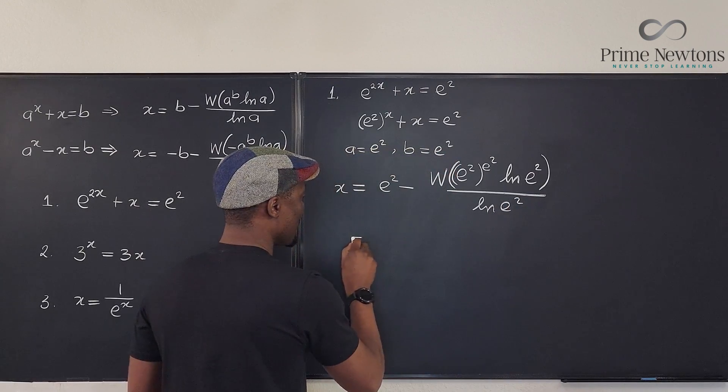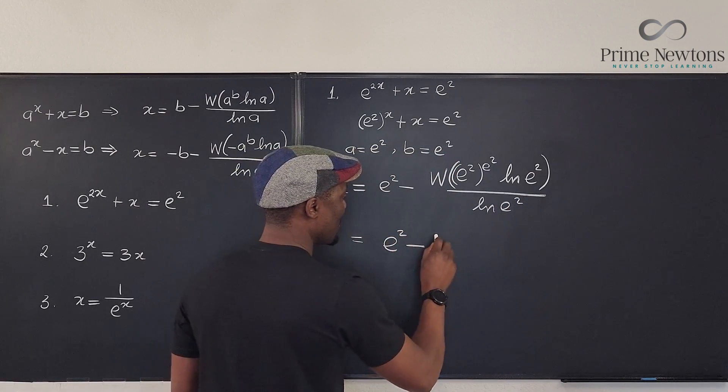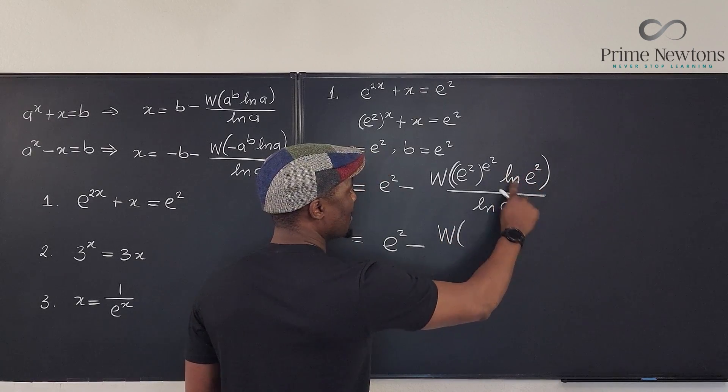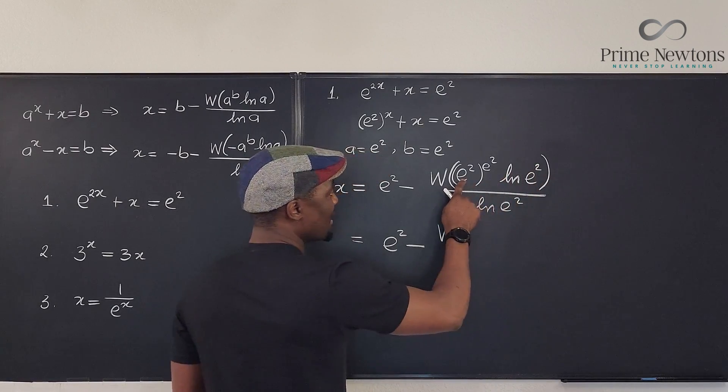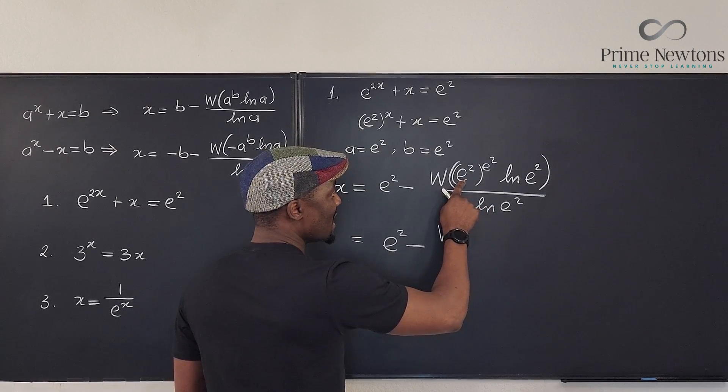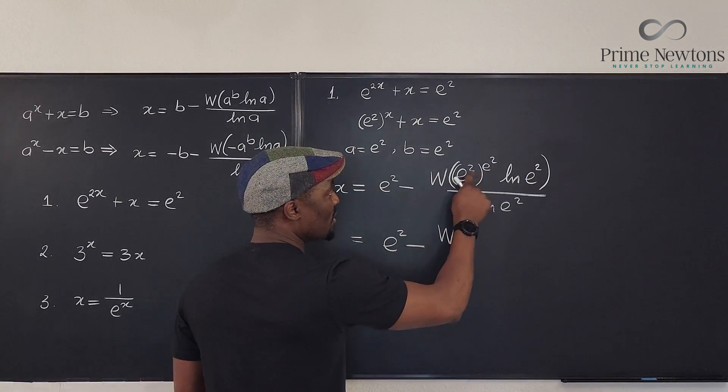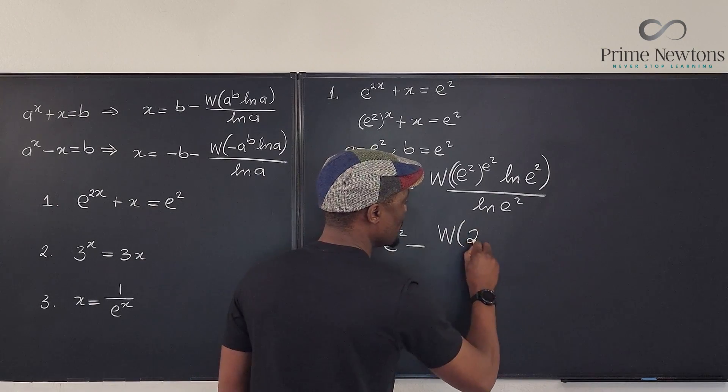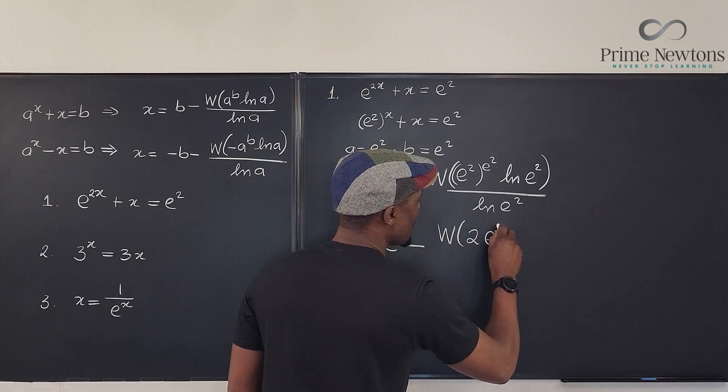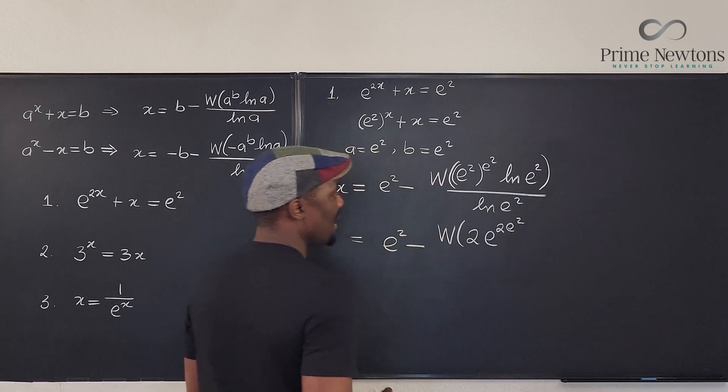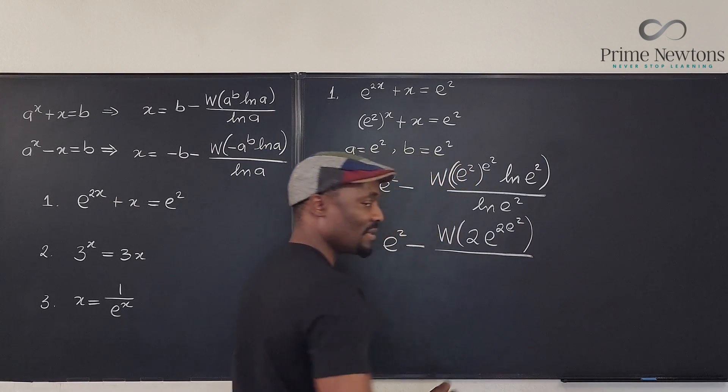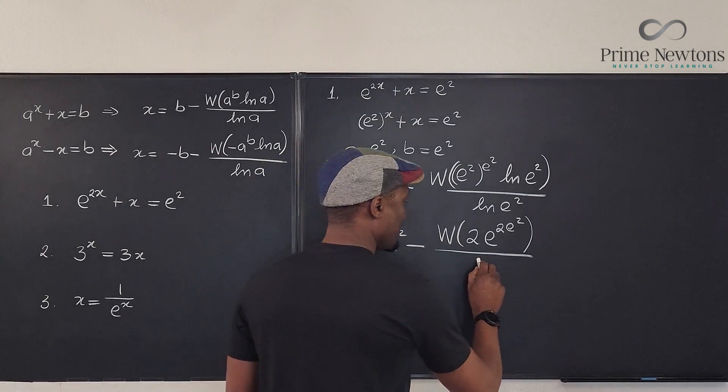But we know that this is e squared minus w of, this simplifies to 2 because this cancels this. We have 2. This simplifies to, this 2 will multiply. That's e times 2 squared. So, that's going to be the w of 2e to 2e squared. Over 2.